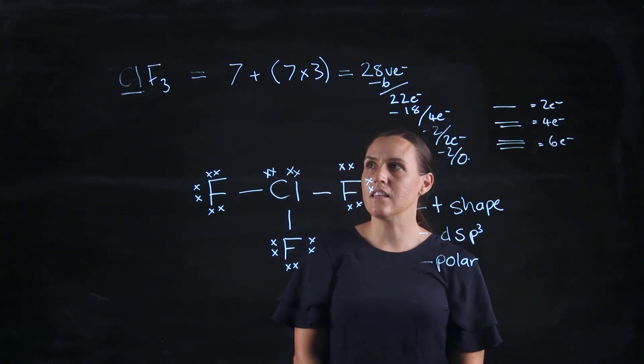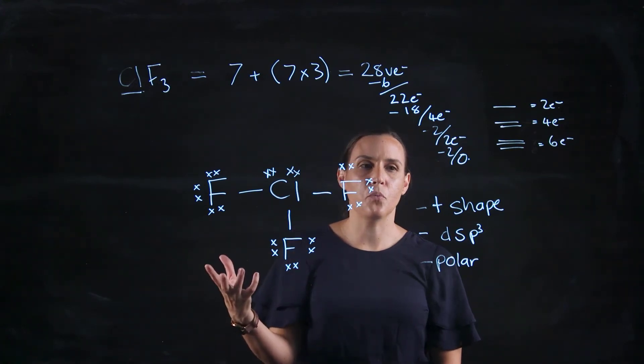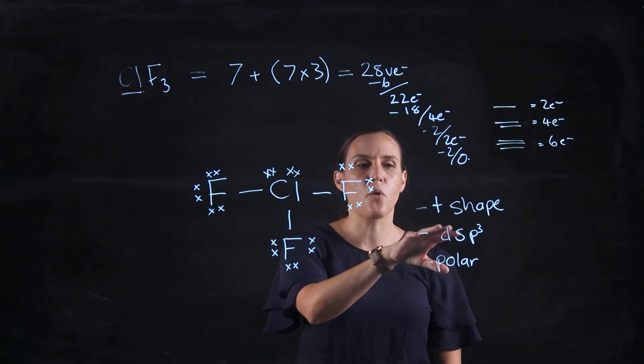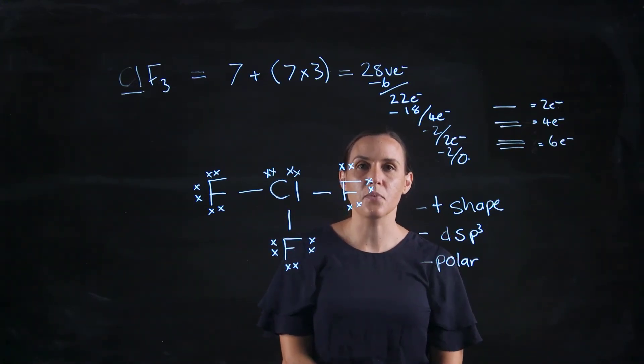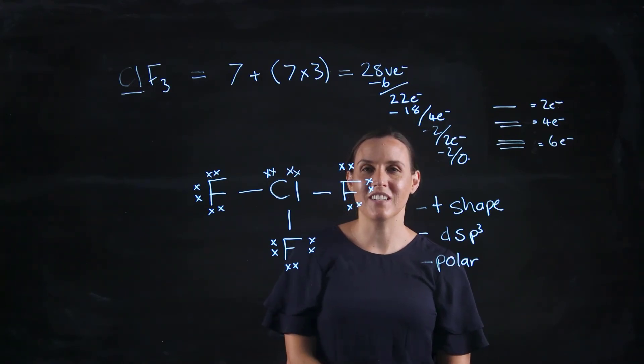And that's because there's nothing directly opposite to cancel out this fluorine. So that's the example where we've gone into a little bit more complicated hybridization and shape, and we've got a polar example for you.